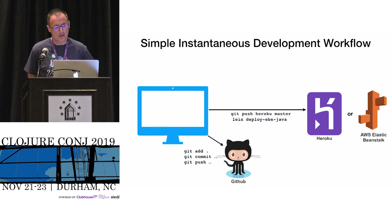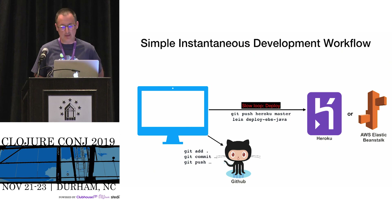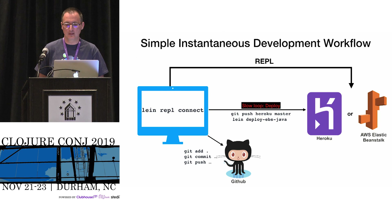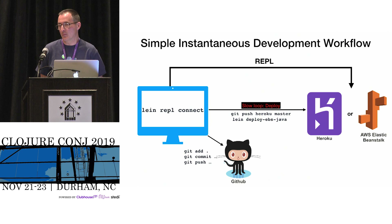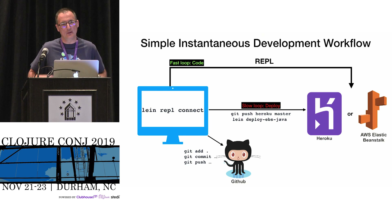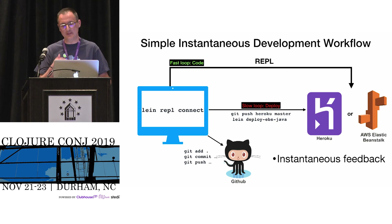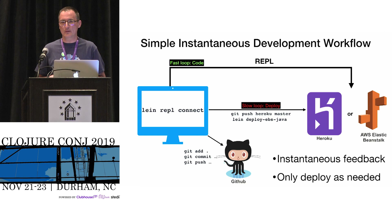I'm going to propose a simple, instantaneous development workflow. We have the same deploy to Heroku or Beanstalk, but then we try to have a REPL server running everywhere we are. If I'm working on Beanstalk, can I jack into a Beanstalk instance and develop against that? This is my fast loop — and my slow loop is when I'm happy with what I've done, I do a deploy. This is not just continuous integration — this is instantaneous integration. You're working away, making changes, everything is great, you do your deploy, it takes a minute and a half, kicks you off your REPL session, but it only takes about a second to reconnect.